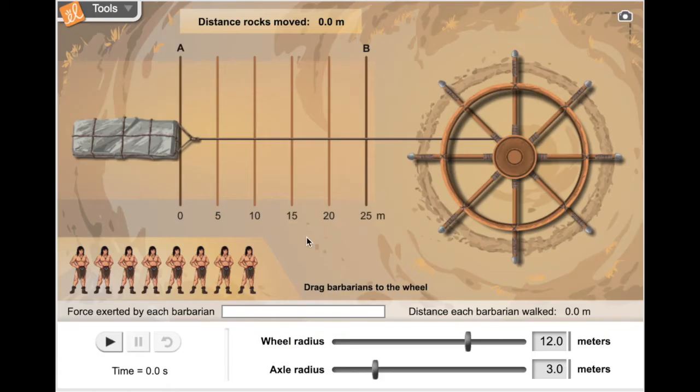In this activity, we will use this simulation to discover the relationship between the wheel radius and the axle radius and how it makes work easier. There are barbarians here that can be used as the input force to push on the wheel. They're going to push, make this wheel spin, and that will drag this rock, that's the load, or the output force, a distance of 25 meters.